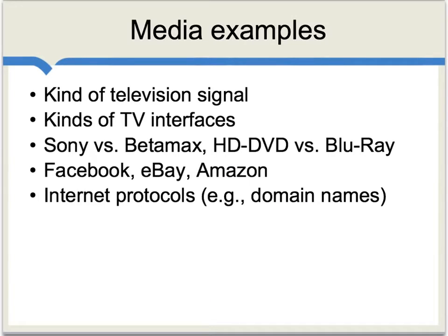Let's consider some other examples from the world of media. For instance, there's the question of whether you have the right kind of TV to receive the signal being sent out for other TV owners — digital versus non-digital. Network externalities also arise when we consider different kinds of TV interfaces. Your TV has to connect to a DVD player, but this requires some standardization of the system — Sony versus Betamax during the early years of watching movies on tape, and more recently, HD DVD versus Blu-ray. If you have a Blu-ray player, that's worth a lot more if a lot of other people are using the same system.